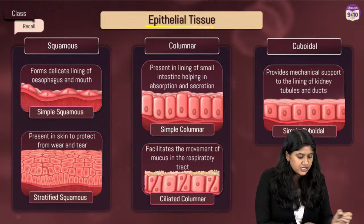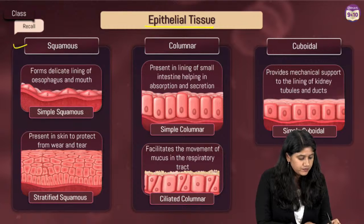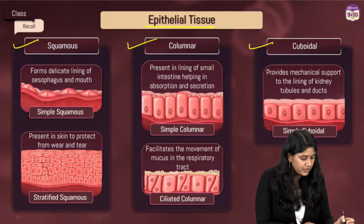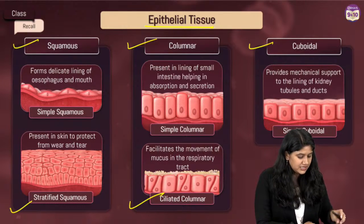We have epithelial tissue with several types: squamous, columnar, cuboidal, stratified, and ciliated.